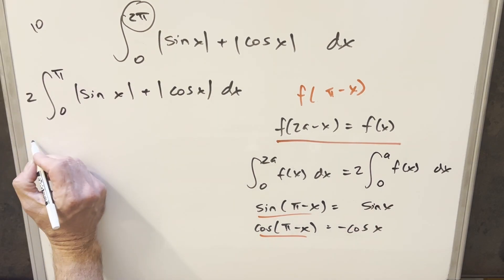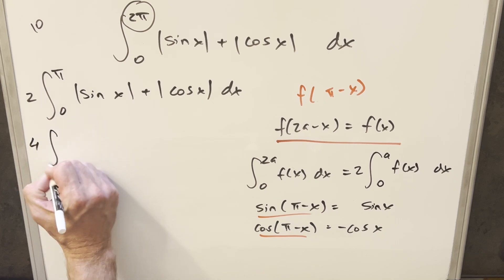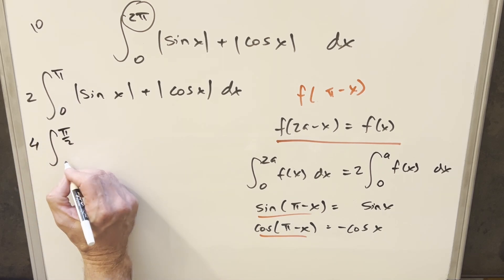Again, bring another 2 out front, 2 times 2, 4, cut the bound in half. Now we're going from 0 to π over 2.